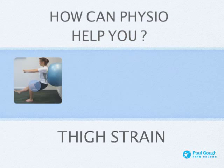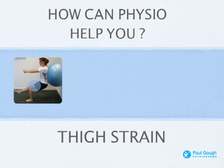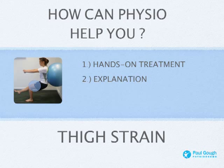So how can physio help? It's a really common injury in sports and we see lots of them. You have to get hands-on treatment — there's nothing else you can do with these muscles. It is the number one thing you need: really deep tissue massage around the quads. We'll also give you a good explanation of what's happened, relevant to you — whether you're a footballer, a walker, a runner, or someone who plays badminton or squash. We'll tell you exactly what you need to do to get back to your sport. We'll also give you exercises to do at home — the image on the left shows a typical exercise to strengthen the quads, great for balance, hamstring, glutes, and quad muscles, all important for recovering from a thigh strain.